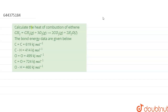Now we have to calculate the heat of combustion of ethene. The reaction is given and the bond energy data are given below. Using this data, we have to find the heat of combustion of ethene. First of all, we are writing the equation.